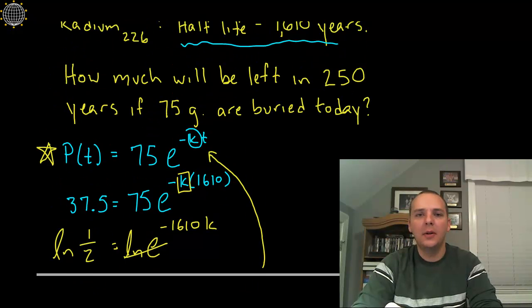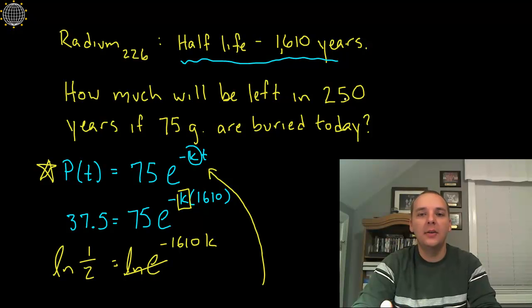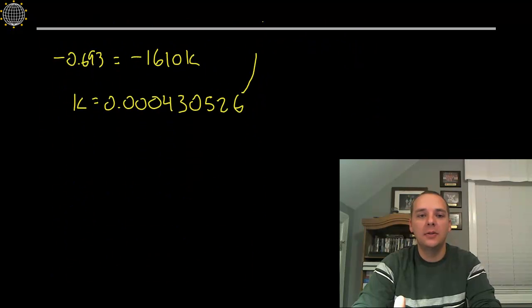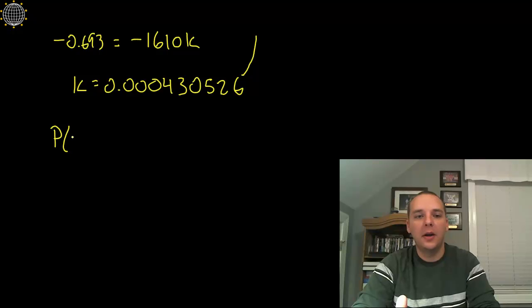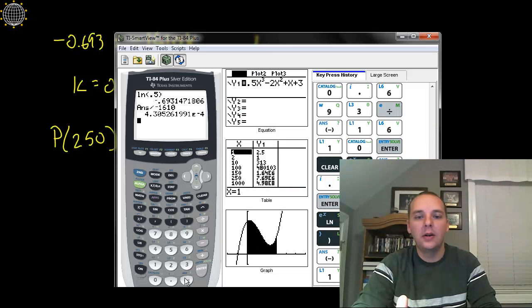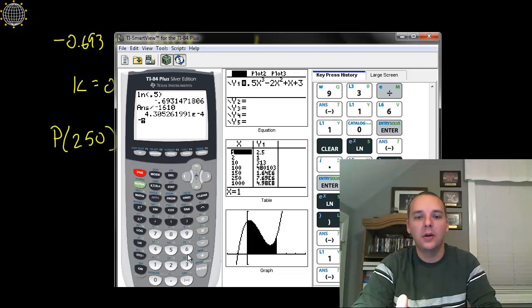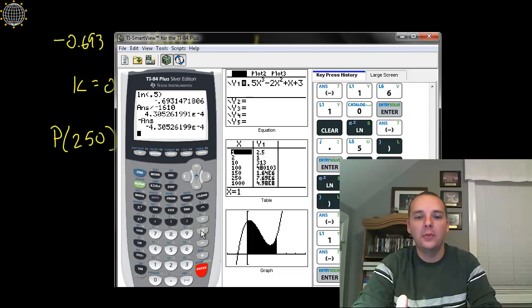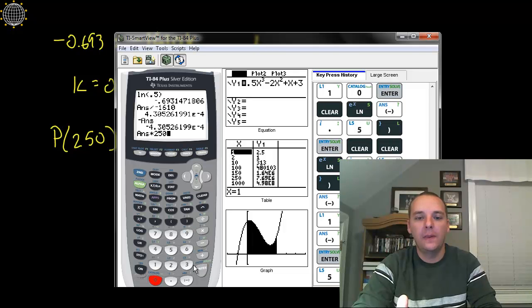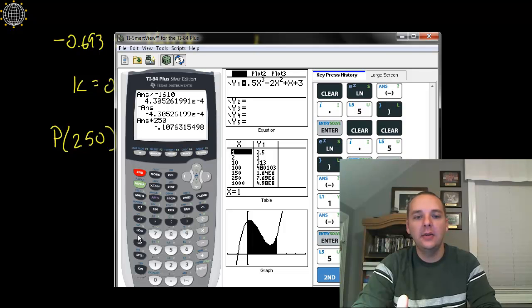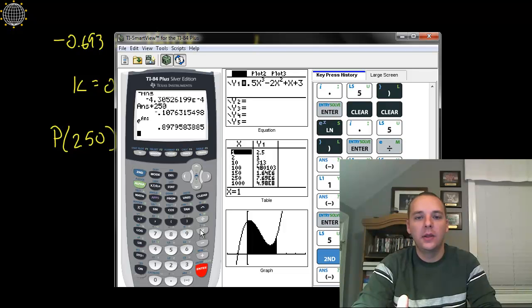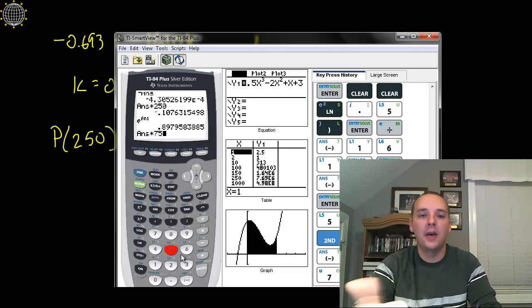If we go back up and look at the original question, the question was how much will be left in 250 years? With this generic model here, I just have to take out the time and plug in 250. I'll just basically do all that on the calculator here and get the amount of radioactive material after 250 years. We'll take this quantity, make it negative, multiply that times 250, then we'll take E raised to that amount, and then we'll multiply that quantity times the 75 grams that we started with.